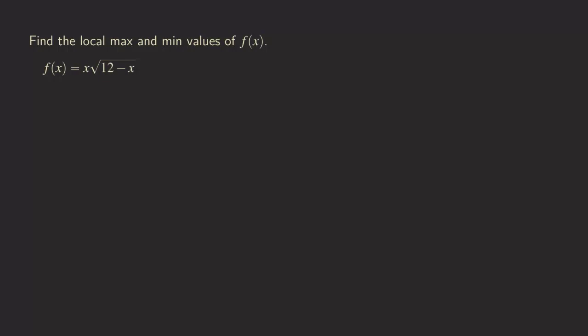The first thing to do is to find critical numbers by taking the derivative. Before we take the derivative, it would be a good idea to rewrite the function in a form that will make it easier. So I'm going to change the radical into a form with the one-half exponent. Now we can take the derivative.